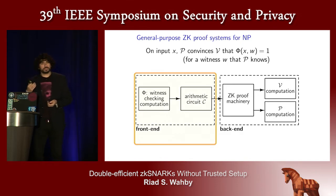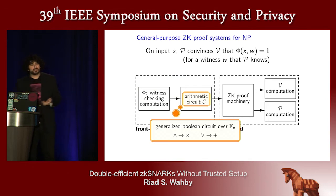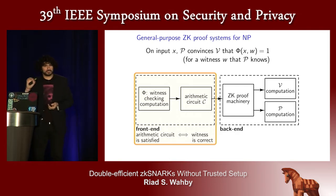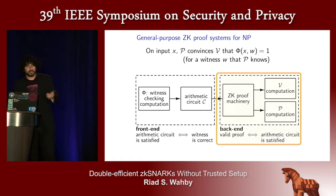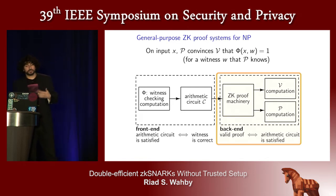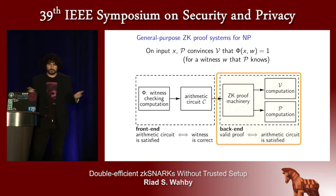In the front end, we convert the computation Φ into an arithmetic circuit — a generalized Boolean circuit where AND becomes multiplication, OR becomes addition, and the wires take values from a finite field. The front end constructs this arithmetic circuit such that its satisfaction is tantamount to correct execution of Φ. Then in the back end, we apply proving machinery — some combination of complexity-theoretic and cryptographic objects — to produce prover and verifier computations such that a valid proof establishes satisfaction of the arithmetic circuit, which further guarantees correct execution of Φ.